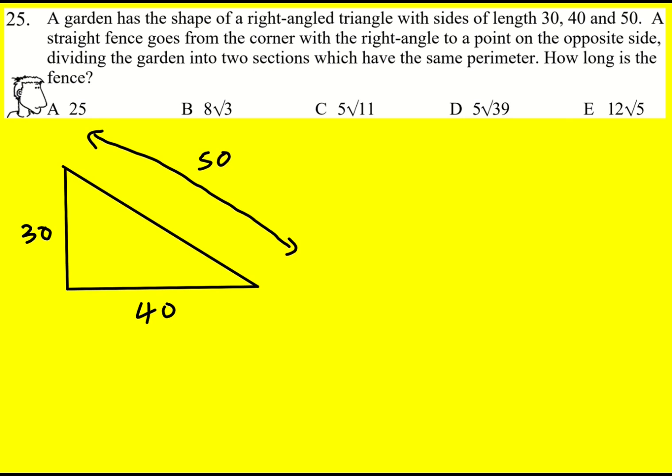A straight fence goes from the corner with the right angle to a point on the opposite side, dividing the garden into two sections which have the same perimeter. So I've got a longer value here, 40.